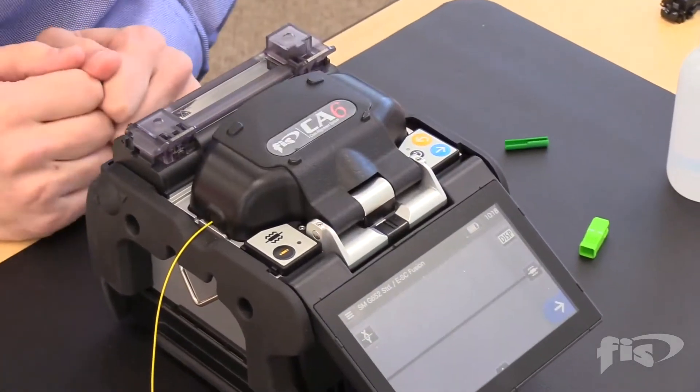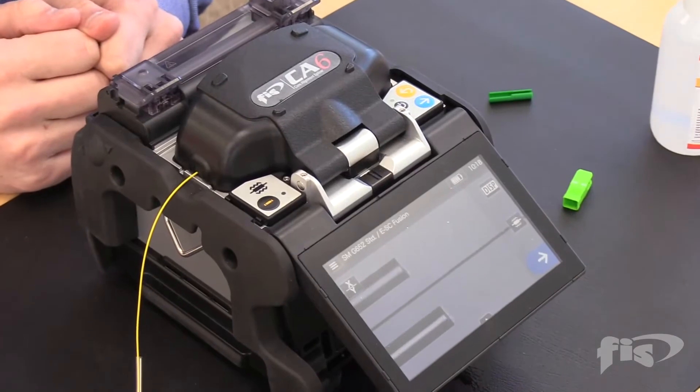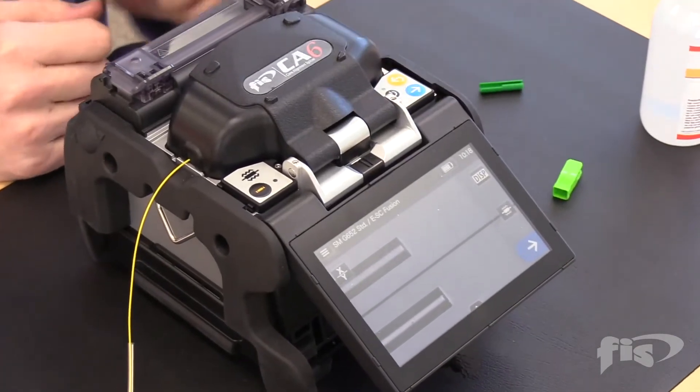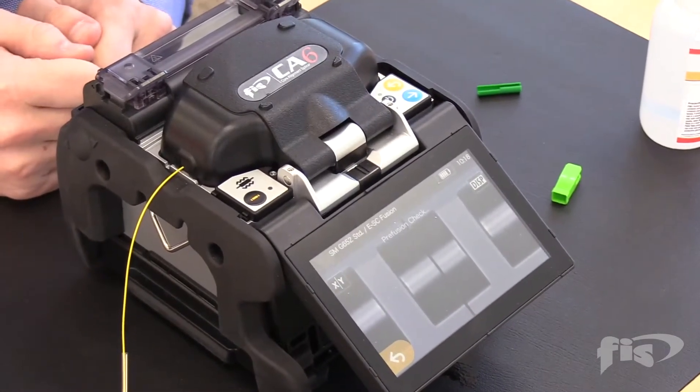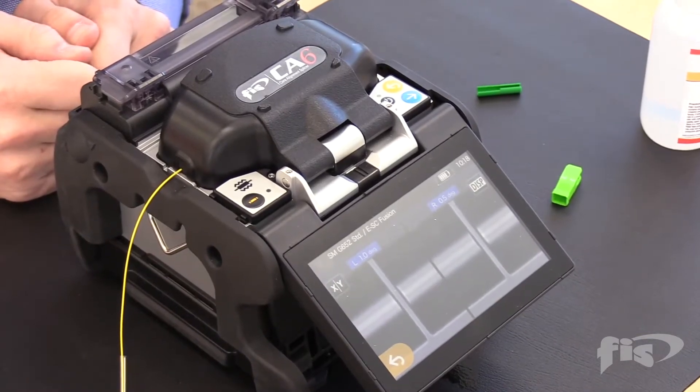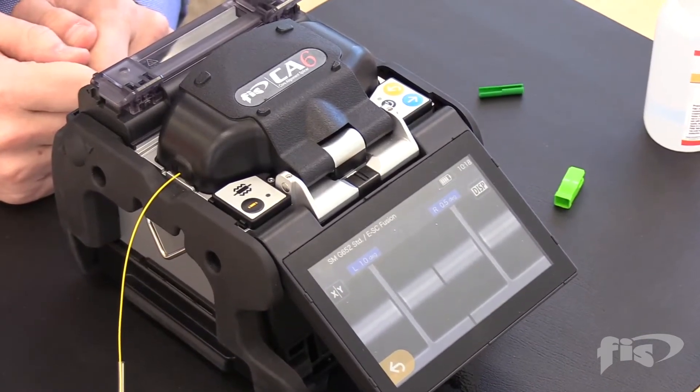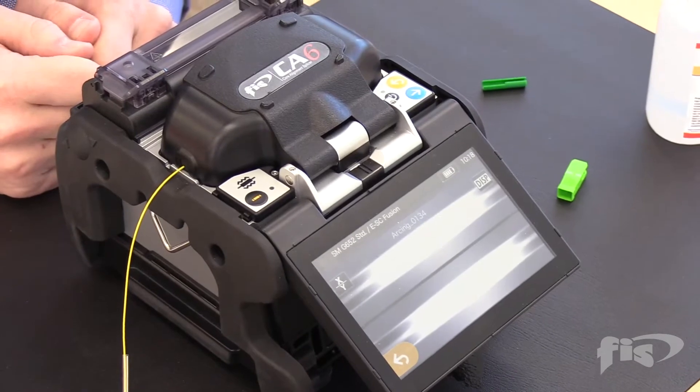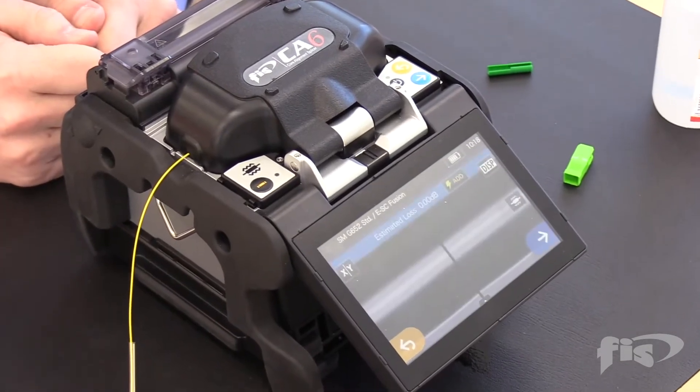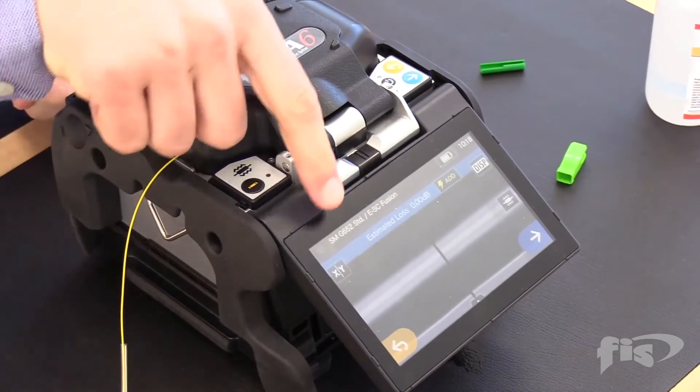Close the lid. When the left side is done aligning, press the blue arrow button to finish the alignment process and the splicing. The splice is complete with the estimated loss on top.